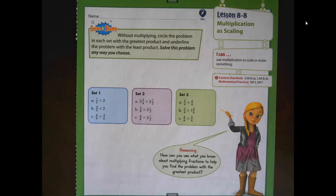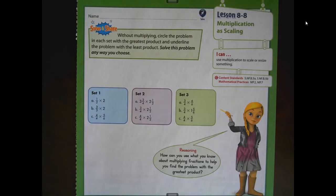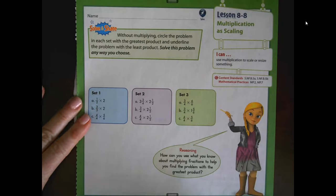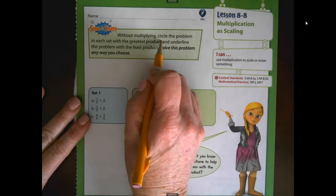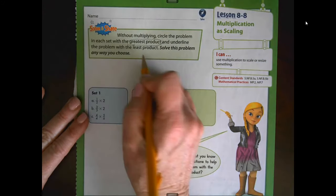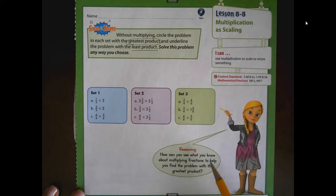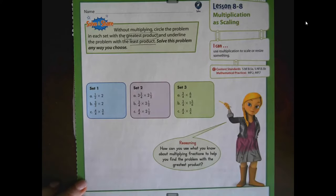We're going to work the solve and share problem just to get a good grip of this concept. It says, without multiplying, circle the problem in each set with the greatest product and underline the problem with the least product. We're going to solve the problem any way you choose. Our fifth grade helper says we can use reasoning — how can you use what you know about multiplying fractions to help you find the problem with the greatest product?